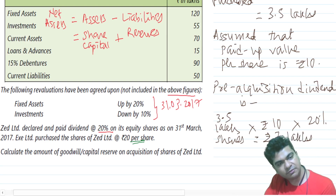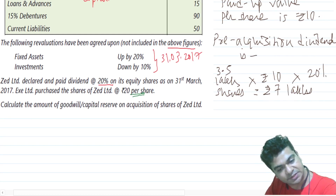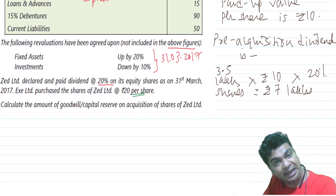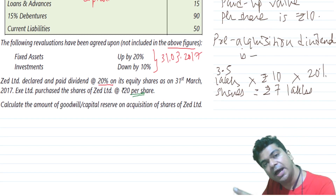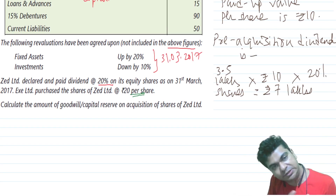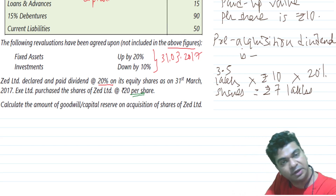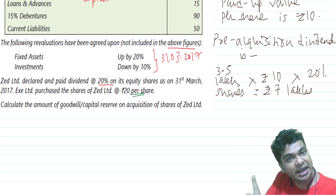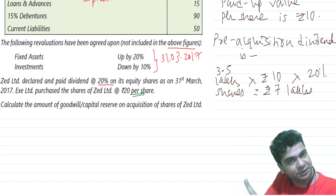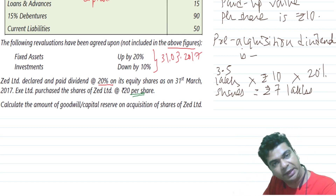The pre-acquisition dividend of ₹7 lakhs will be credited to the investment account, reducing the cost of investment by ₹7 lakhs. This is as per Accounting Standard 21.